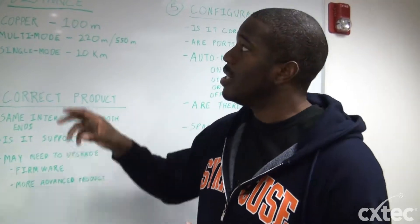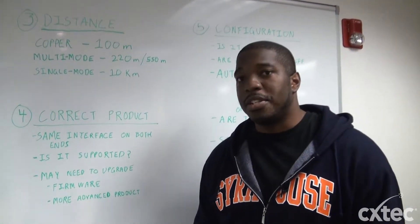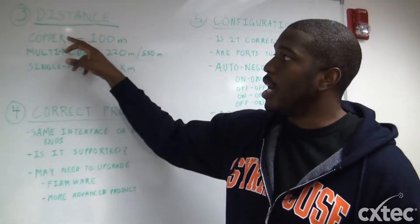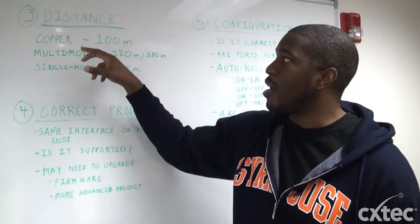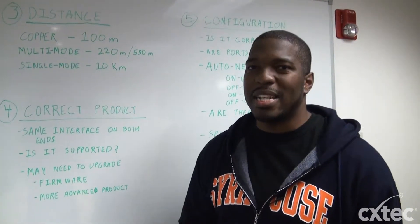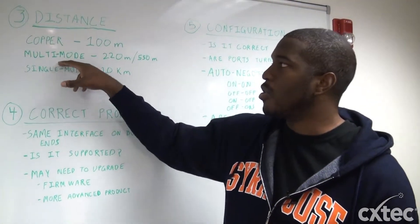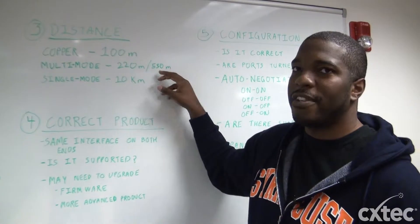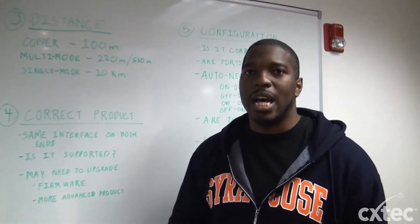Number three is distance. Make sure the distance you're using matches the technology you're using. With copper twisted pair, you get about 100 meters — go over that and you'll likely lose connection. A couple of common fiber types: multi-mode is 220 meters or 550 meters depending on the micron, and single-mode is usually about 10 kilometers. Make sure you're not going over those limits.